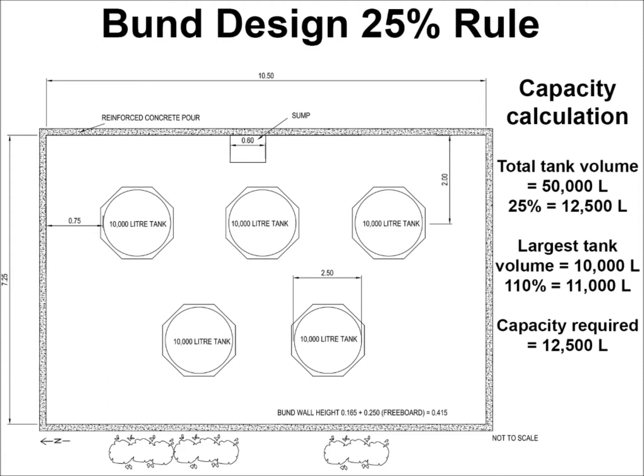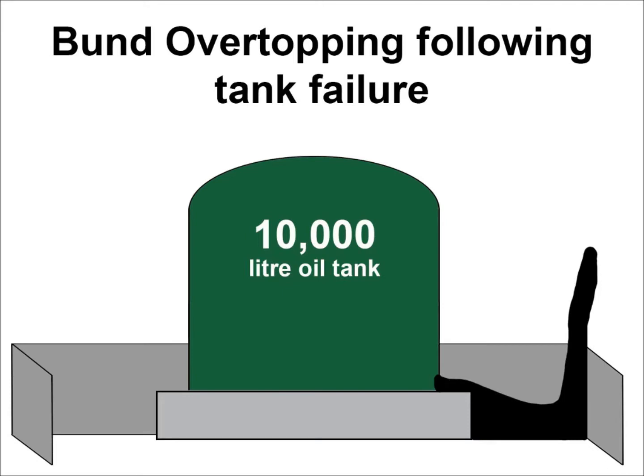Where multiple containers are being housed in the same bund, it is important to ensure the contents of the tanks are compatible with one another. The extra 10% capacity is to allow for additional liquids such as rainwater, firefighting media, and overfilling of the containers. It also reduces the chance of liquid overtopping the sides of the bund where the contained liquids are not static, causing a wave or tidal wave effect.